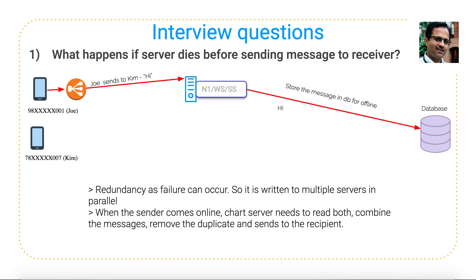Now let's talk about some of the interview questions. The first question is: what happens if the server dies before sending a message to the receiver? Let's take an example where Joe wants to send a message to Kim. Joe sends a message and it reaches Node 1, but due to some issue Node 1 fails. So what we have to do is, as soon as Joe sends a message, it has to be sent in parallel to two different machines — Node 1 as well as Node 1's replica.